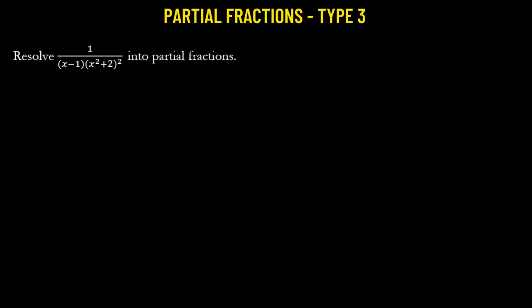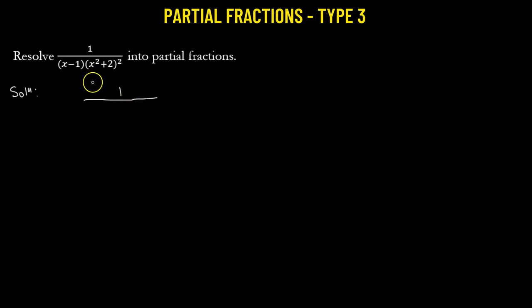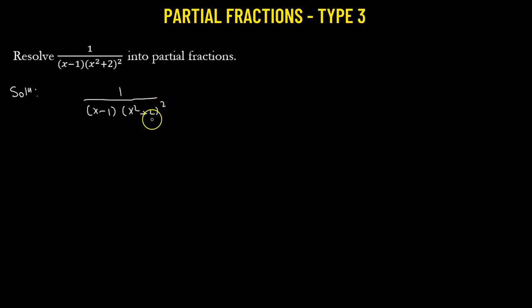In this problem, we need to resolve the given rational fraction into its partial fractions. We observe that the denominator is composed of three factors: one factor is x minus 1, multiplied by two factors of x squared plus 2, with x squared plus 2 repeating twice.